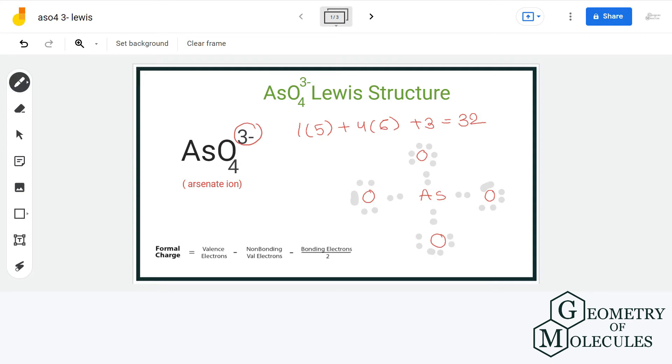Let us calculate formal charge of each atom just to confirm that this is the best possible Lewis structure. For oxygen, we have 6 valence electrons minus 6 non-bonding electrons minus 2 bonding electrons divided by 2, that will give us a formal charge of minus 1. For arsenic, we have 5 valence electrons minus 0 non-bonding electrons minus 8 bonding electrons divided by 2, that will give us a formal charge of plus 1.